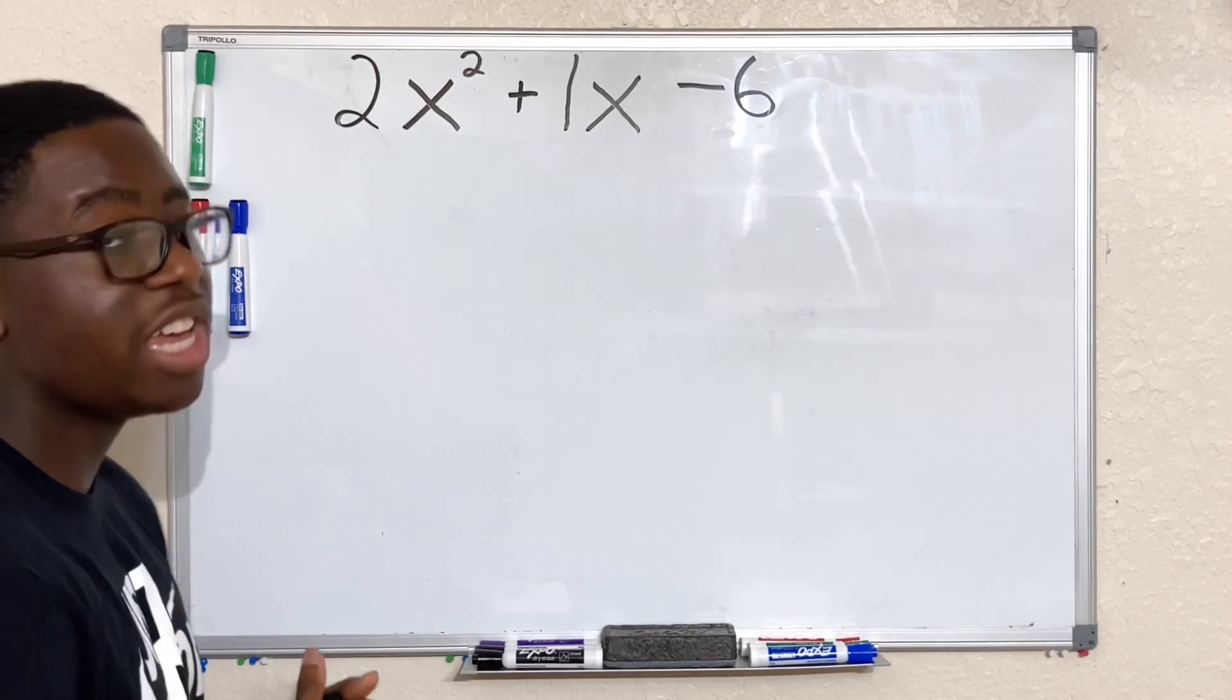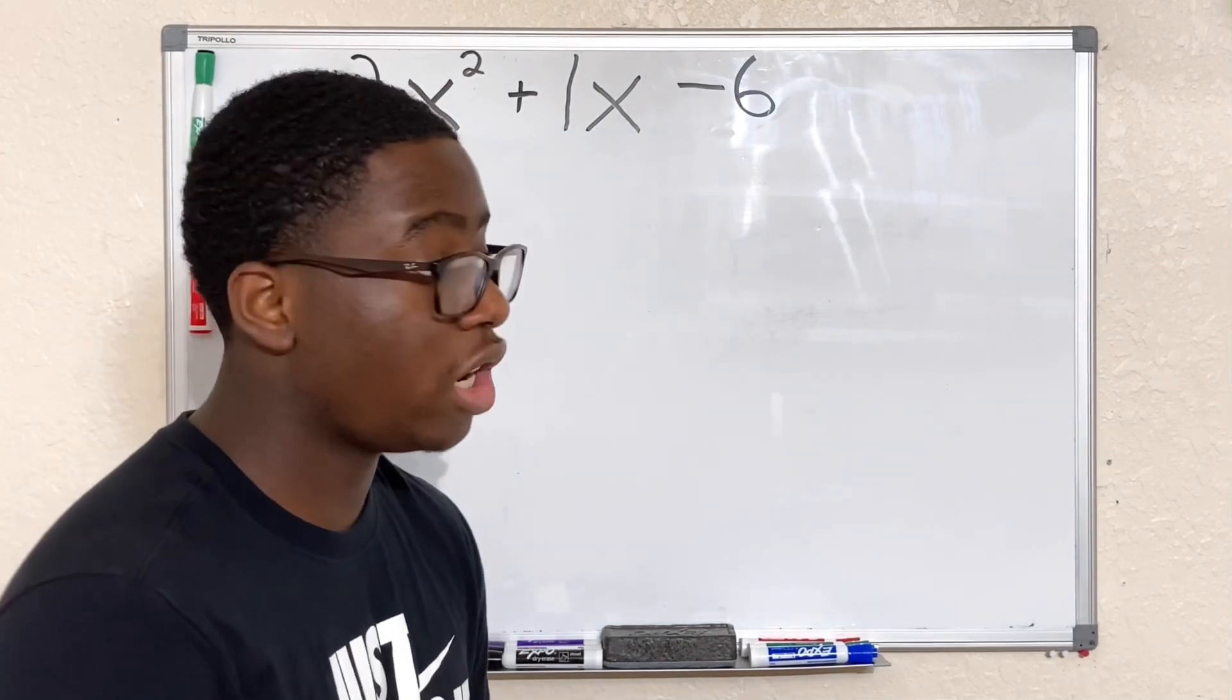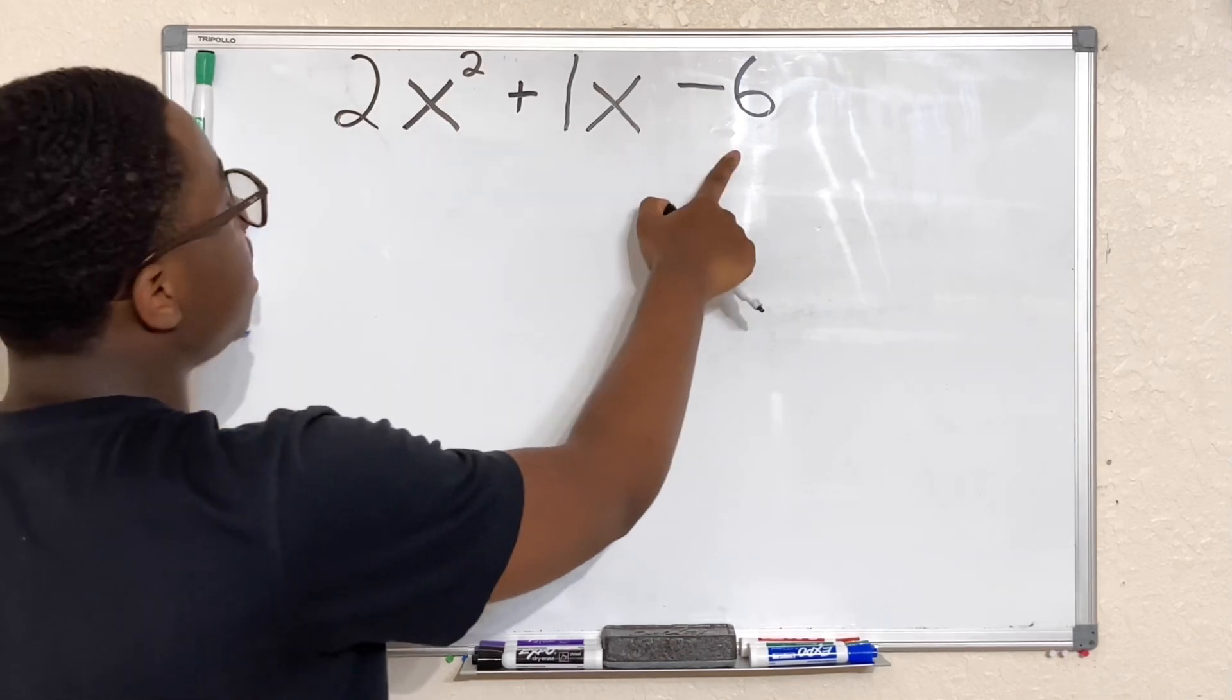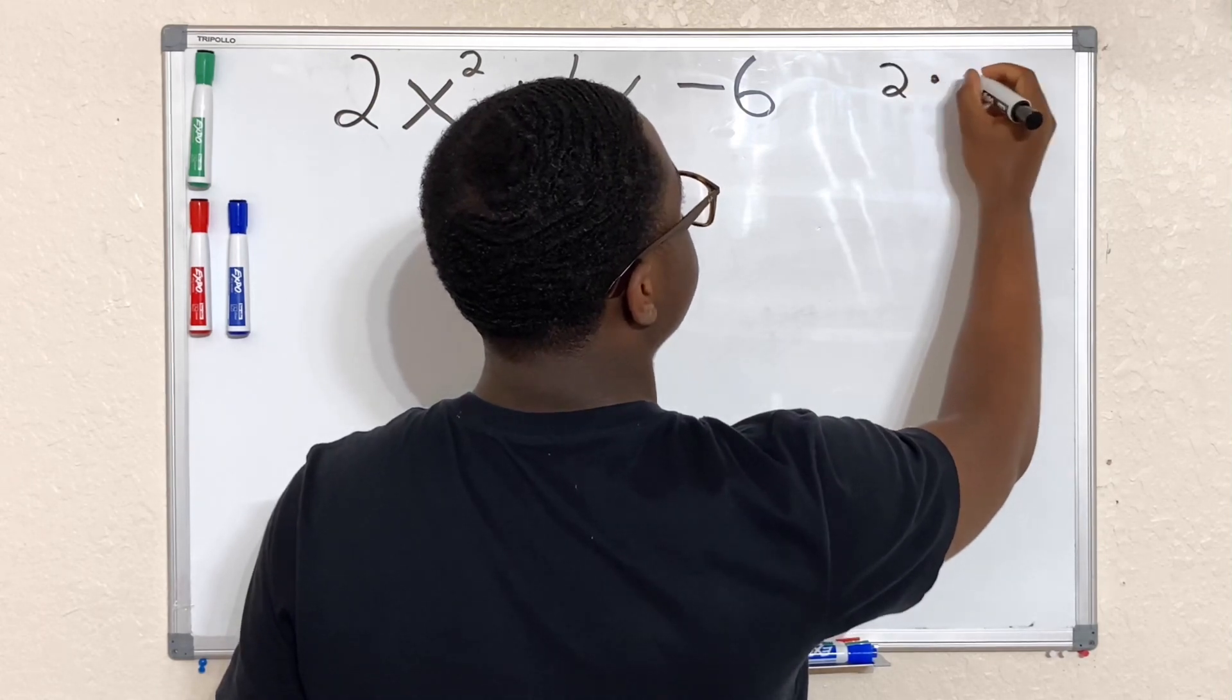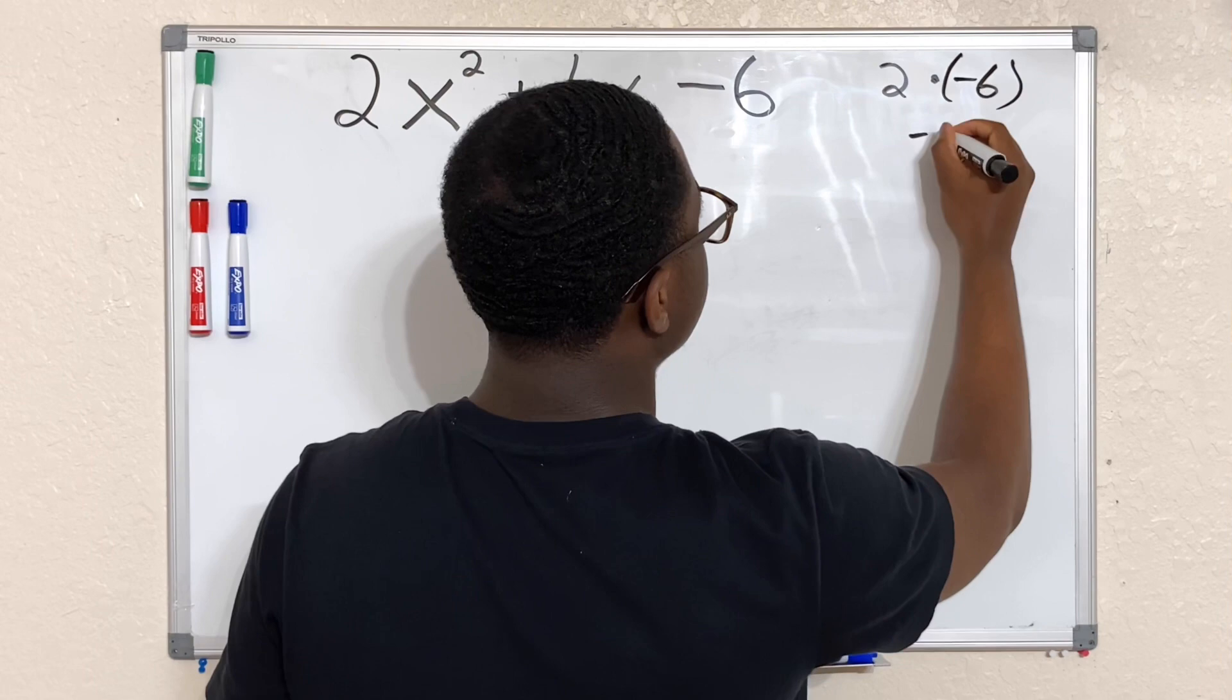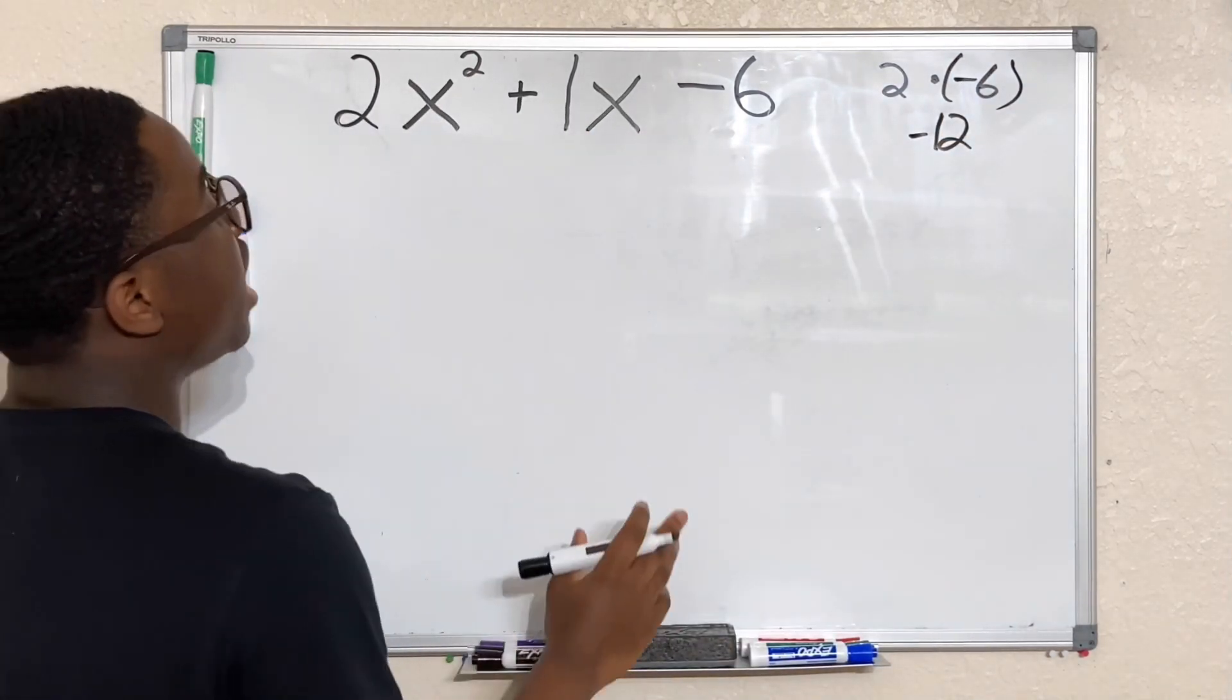Now we're gonna go ahead and multiply a and c. The first step in solving a trinomial with the leading coefficient is going to be multiplying a and c. So we have 2 times -6. That'll give us a -12.